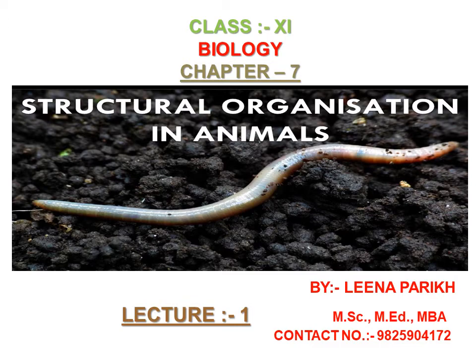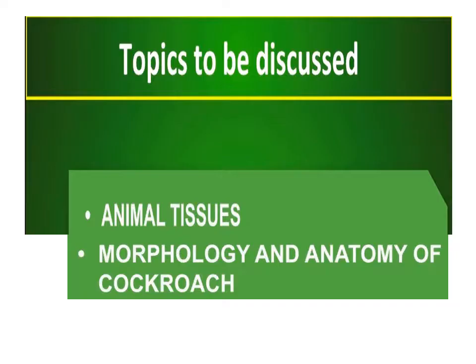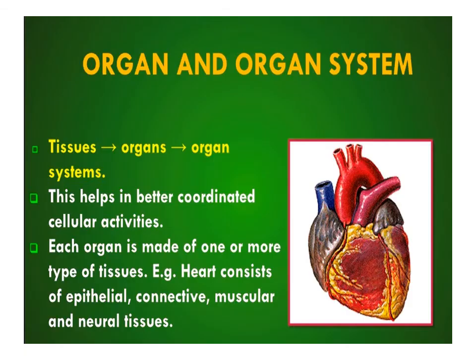Biology Chapter 7: Structural Organization in Animals for Class 11. Topics to be discussed in this chapter are Animal Tissue, Morphology and Anatomy of Cockroach.